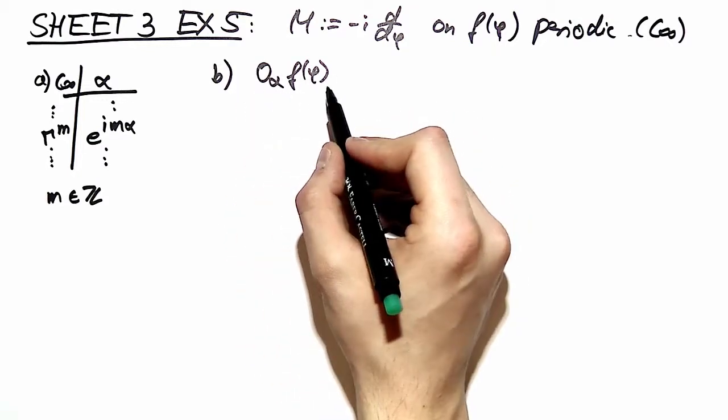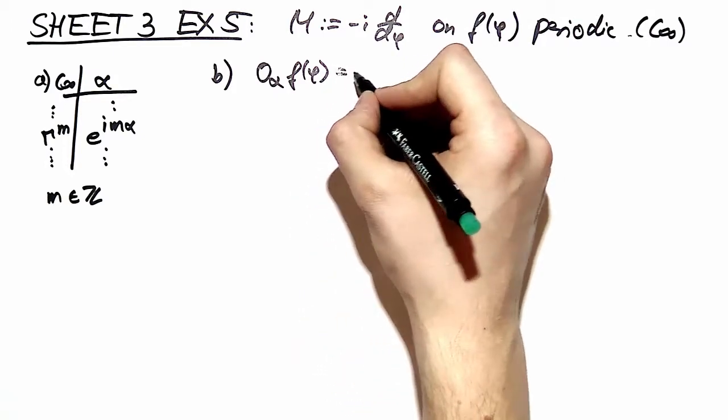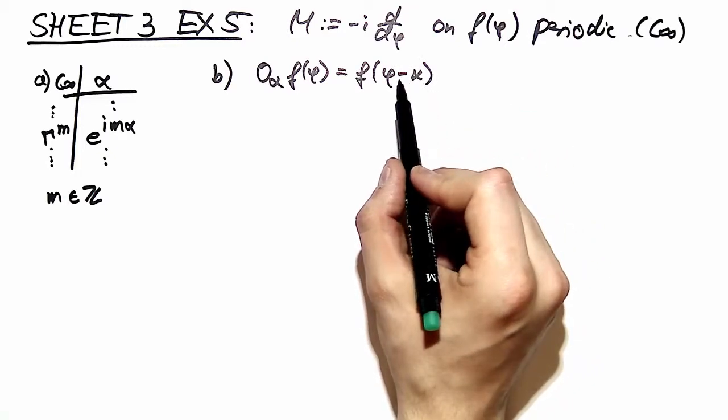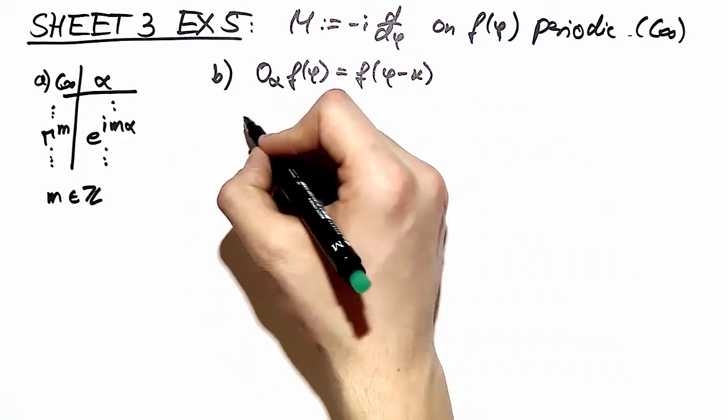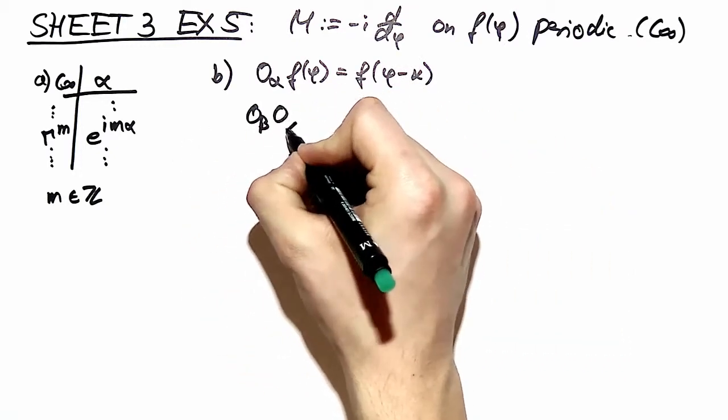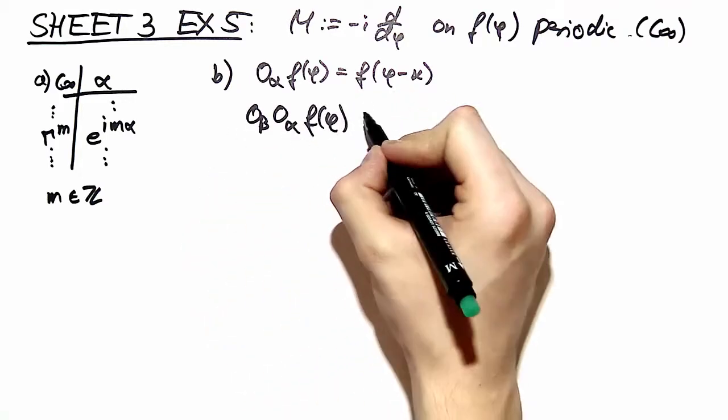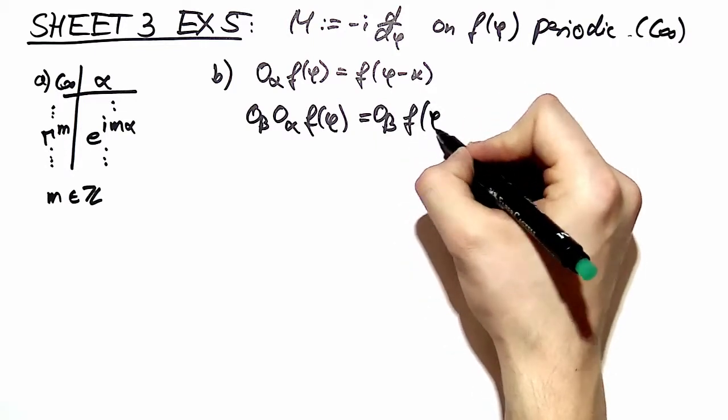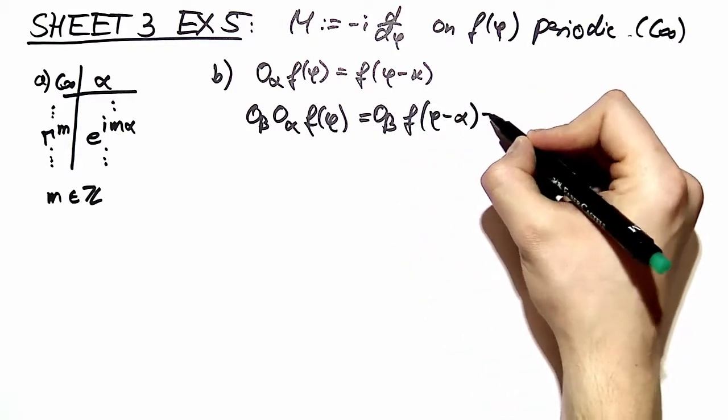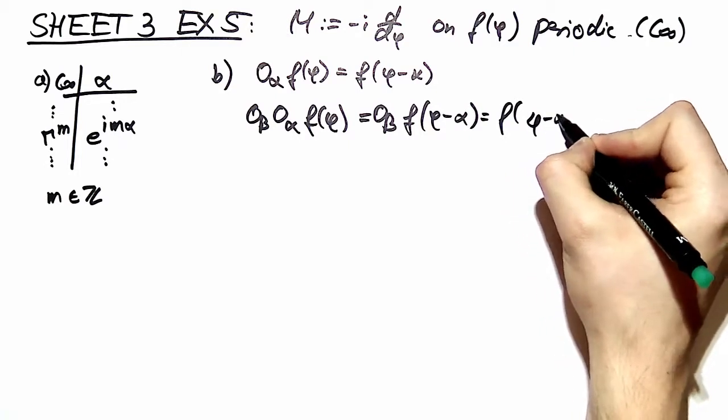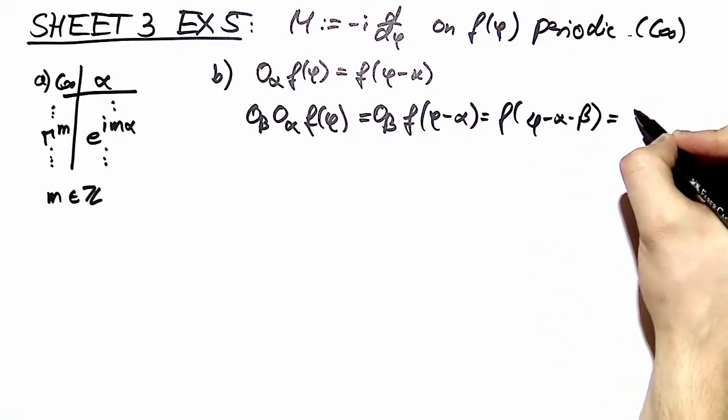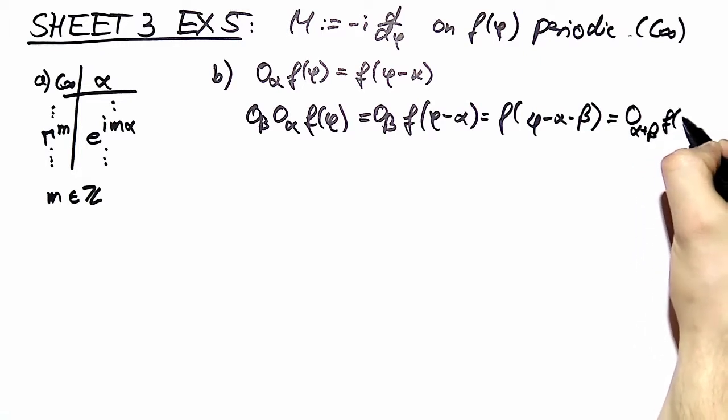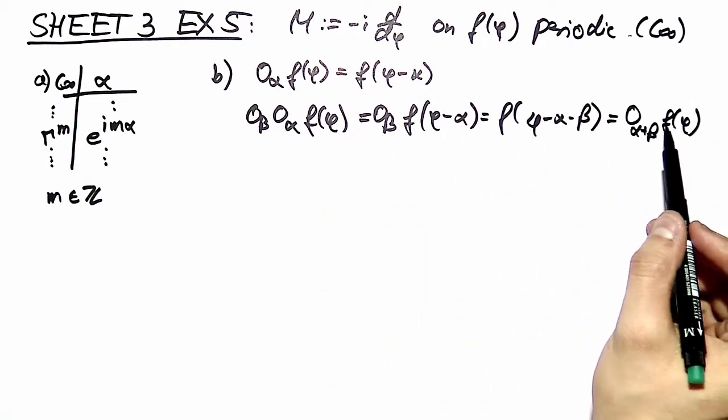So what happens if we transfer that? Well it's easy, you can guess what happens. The angle alpha is just inserted in the argument. That this is indeed a good representation you can check easily. You act with two different rotations on a function and what happens? Well you subtract first one angle and then you subtract the other angle. And that's just the same as subtracting both angles. This is only valid because we have periodicity.